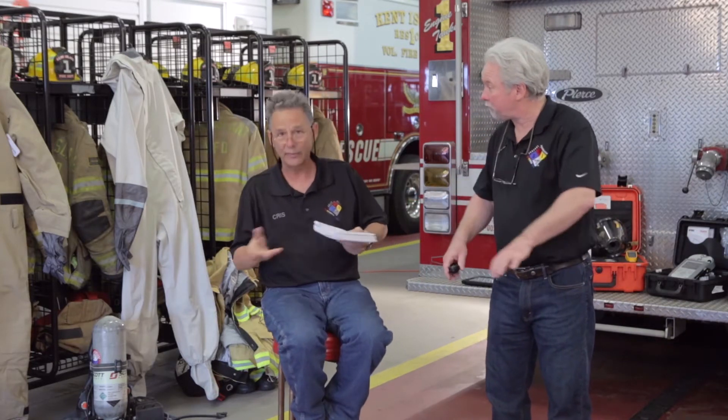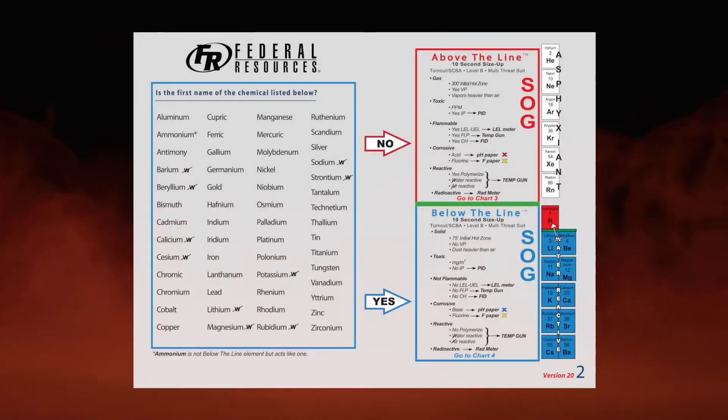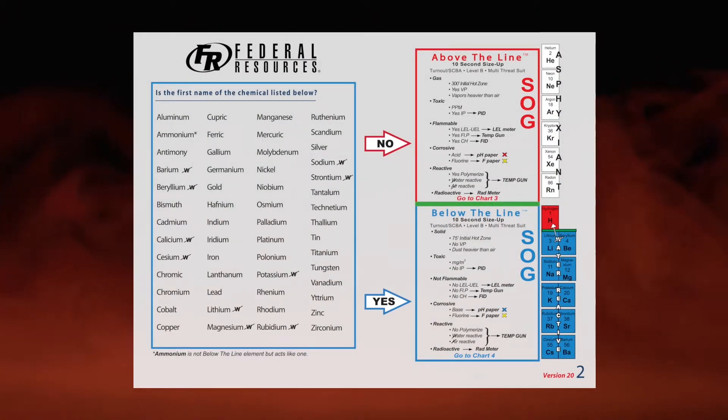You know it's a bird — it's probably got a beak, two feet, feathers — but you don't know if it's a dodo bird or a robin. So I go to Antarctica. You know what the climate is, but you don't know the weather. Let's see what the hazards are. You go to chart number two and look for the word zinc. Go down to the Z's — zinc is a yes for the first name.